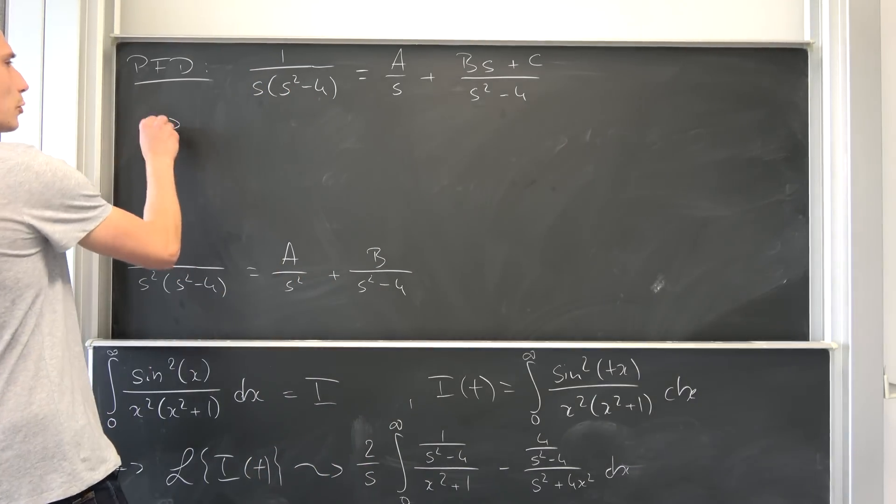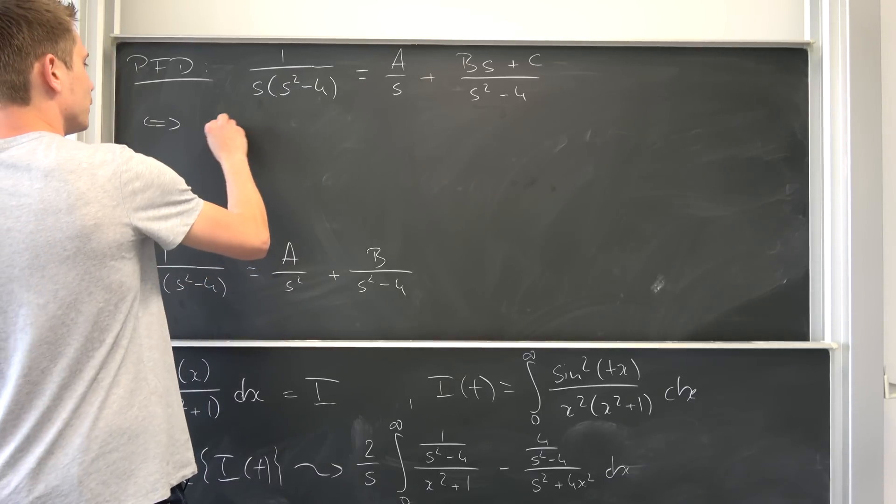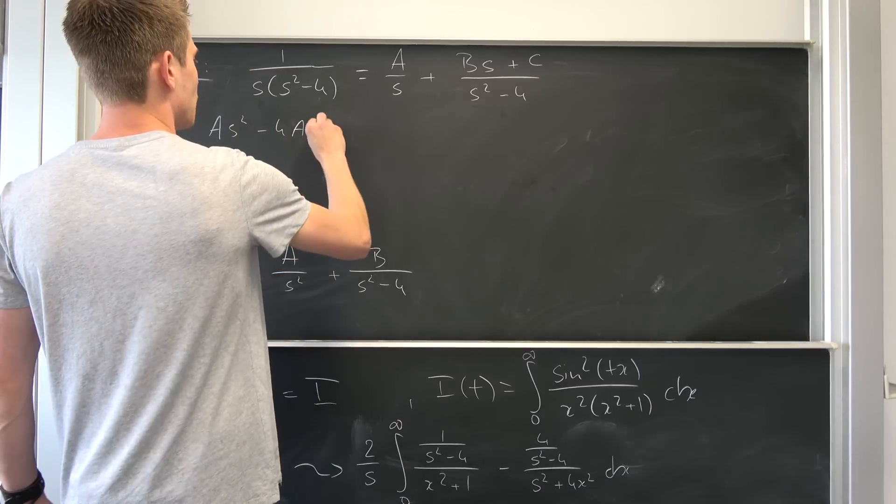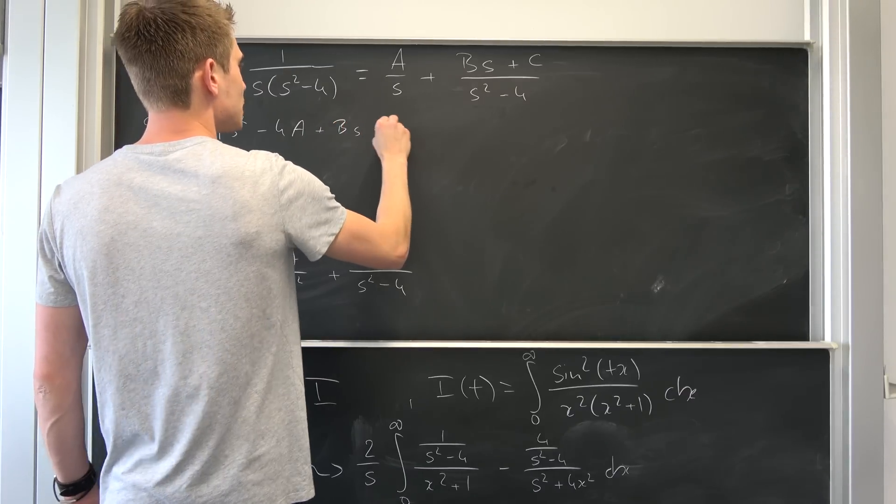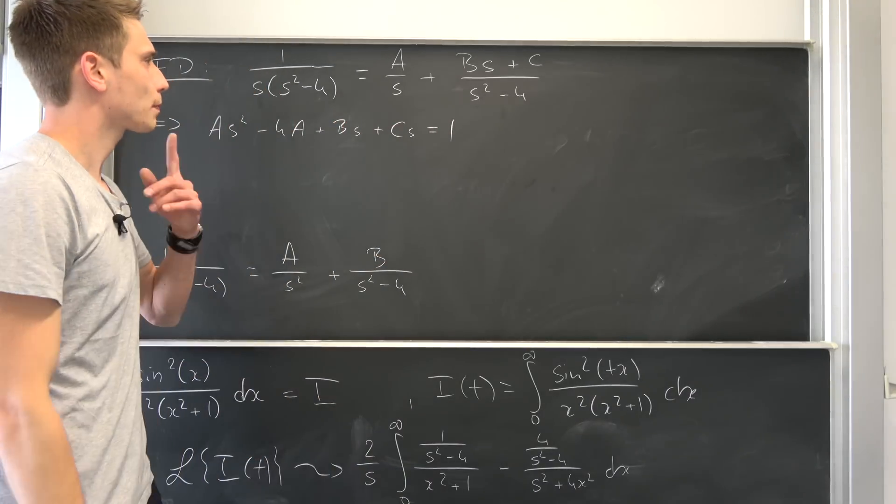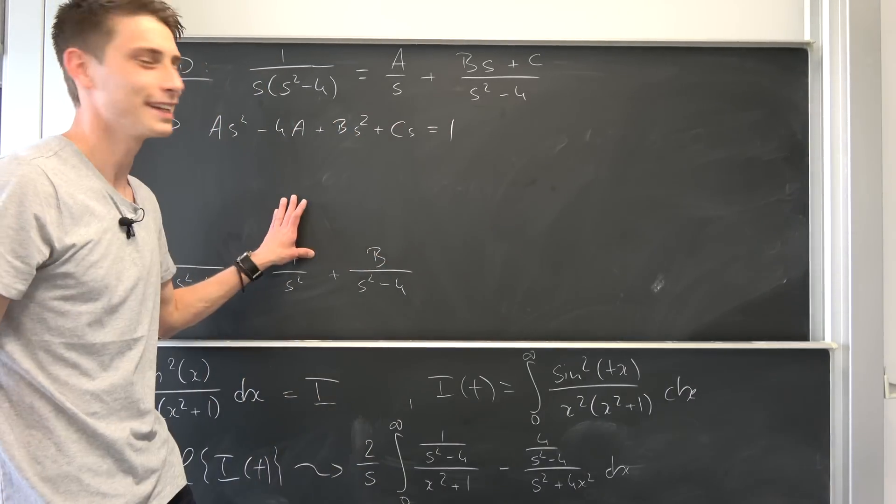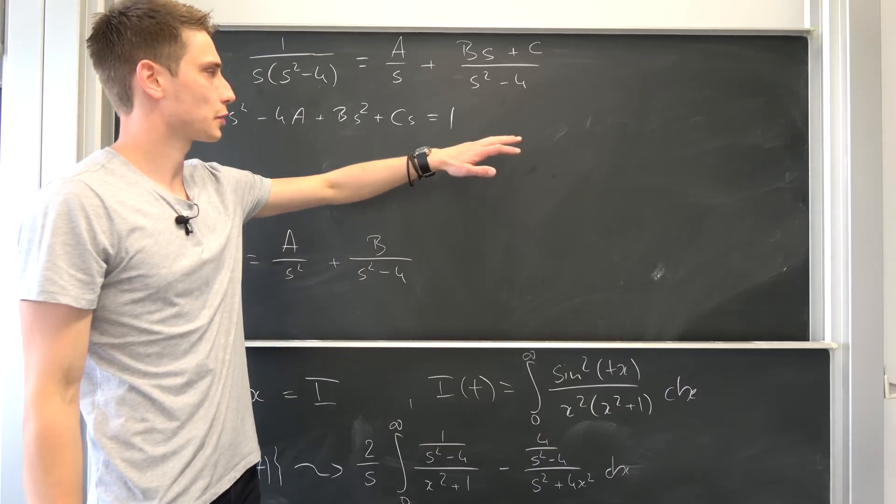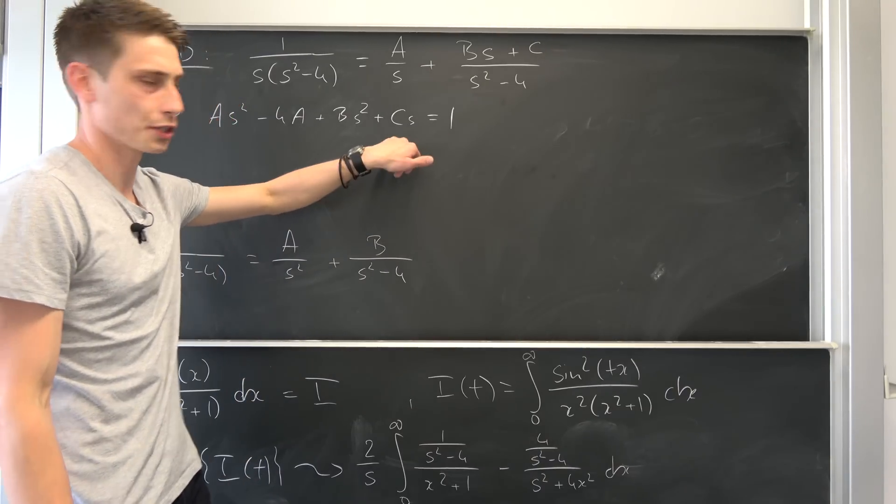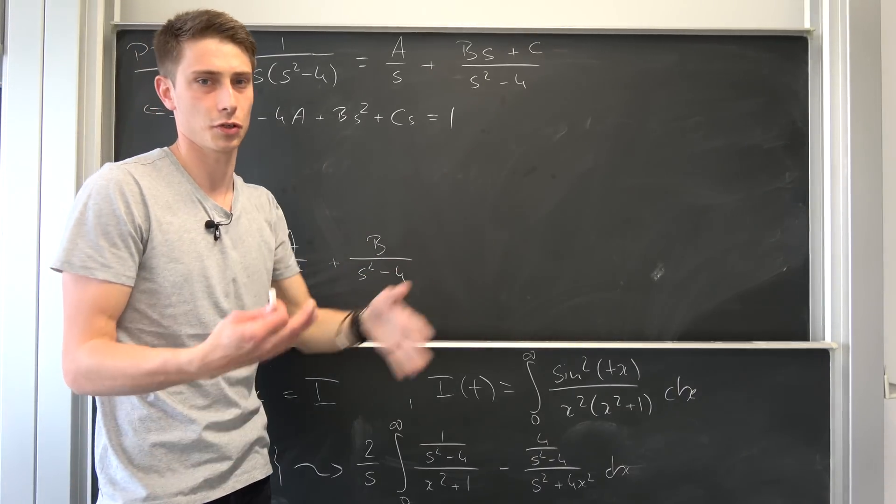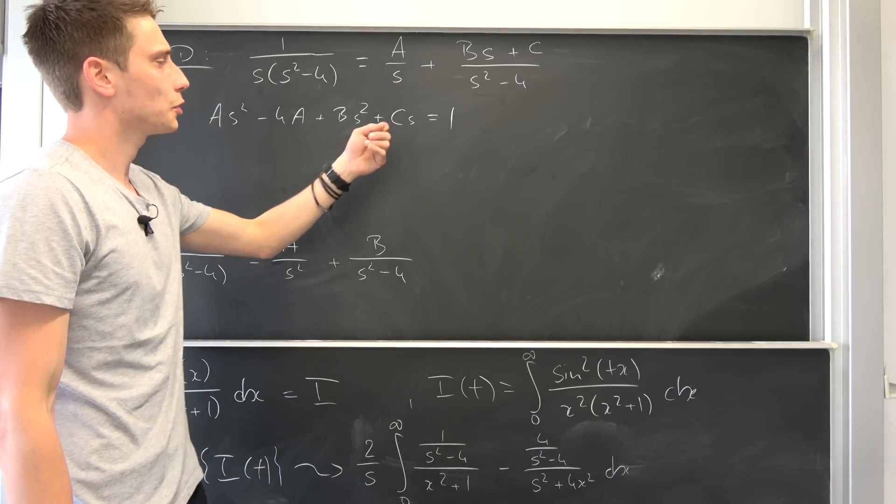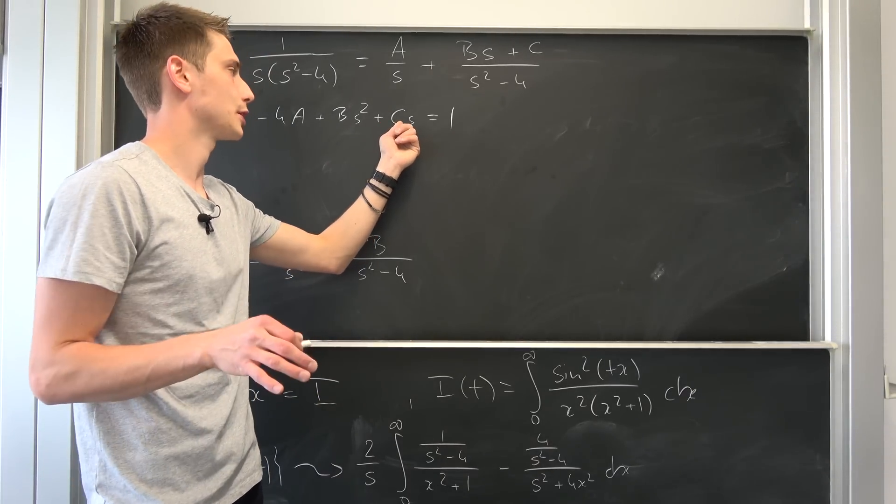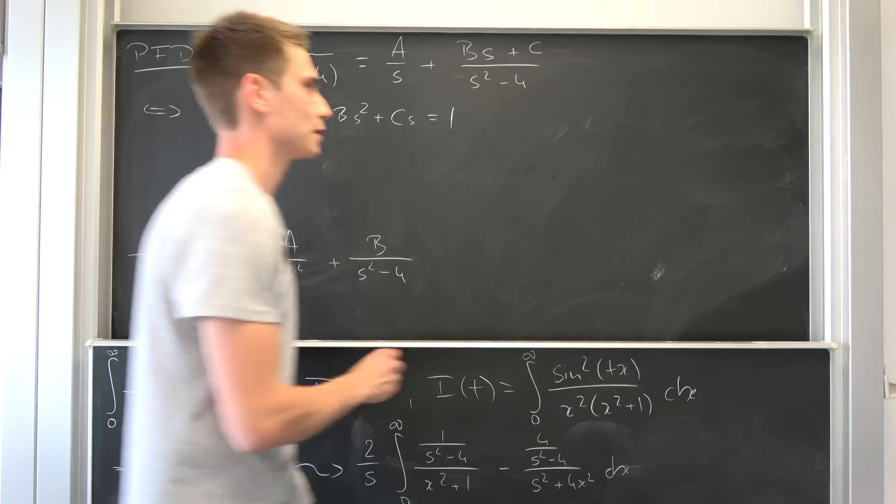Let's just keep that in mind and now we can multiply both sides by this big denominator once again. So that's now equivalent to saying we have a s squared minus 4a and then plus b s squared plus c s is equal to 1 s squared right here. So we have this polynomial once again. We want to get a degree of 0 on this side too because this side has a degree of 0. So you might notice we only have one term right here that includes a degree of 1, so c is supposed to be 0 in this case.